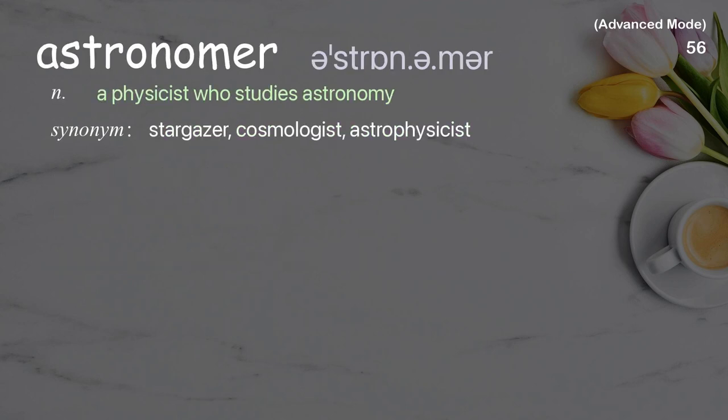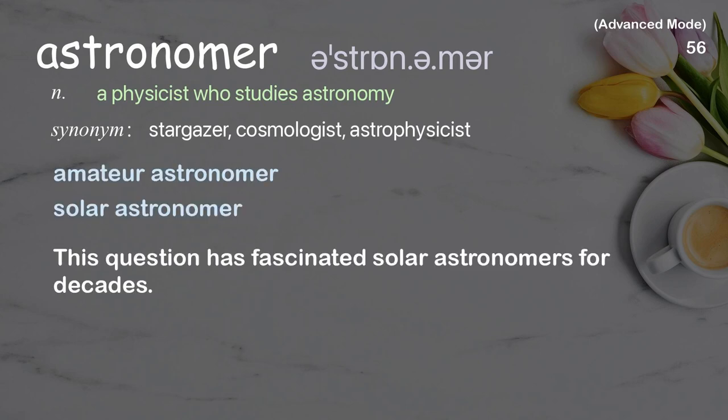Astronomer: a physicist who studies astronomy. Examples: amateur astronomer, solar astronomer. This question has fascinated solar astronomers for decades.